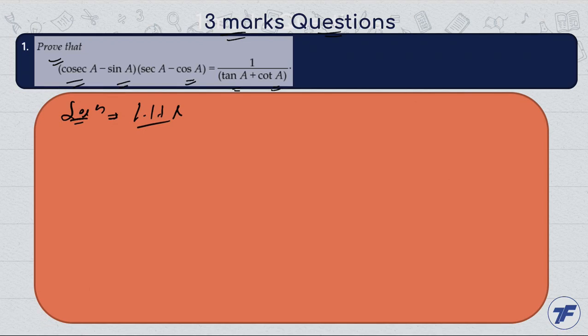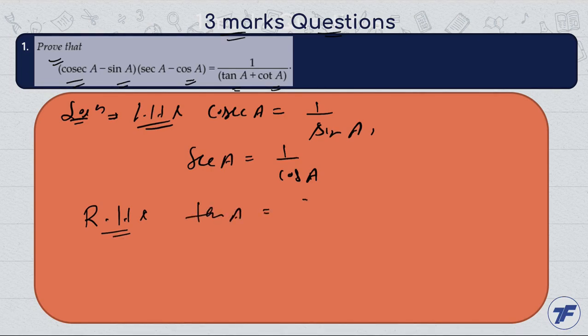Taking LHS, we'll convert cosec A to one by sin A and sec A to one by cos A. In LHS we'll do the same work. Similarly in RHS, tan A can be written as sin A upon cos A and cot A is equal to cos A upon sin A.